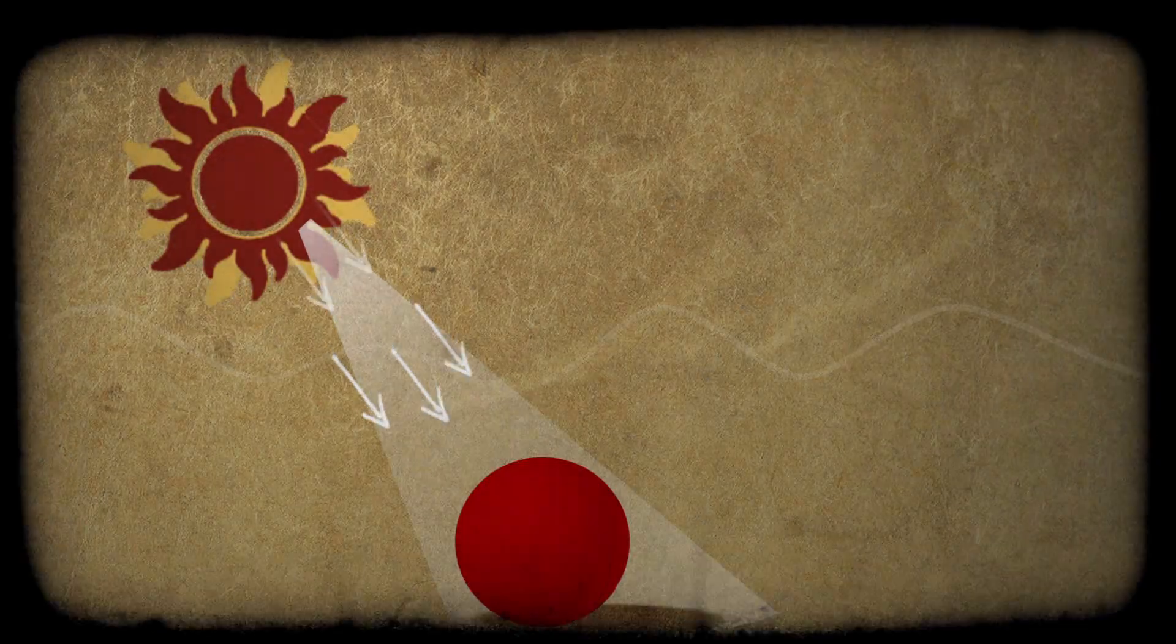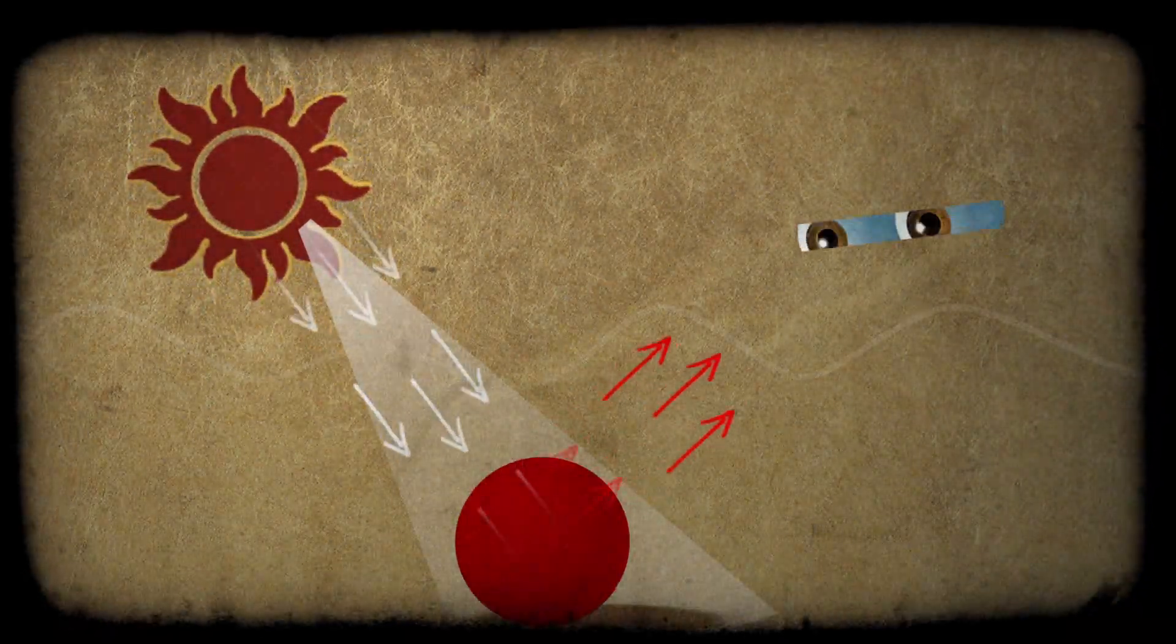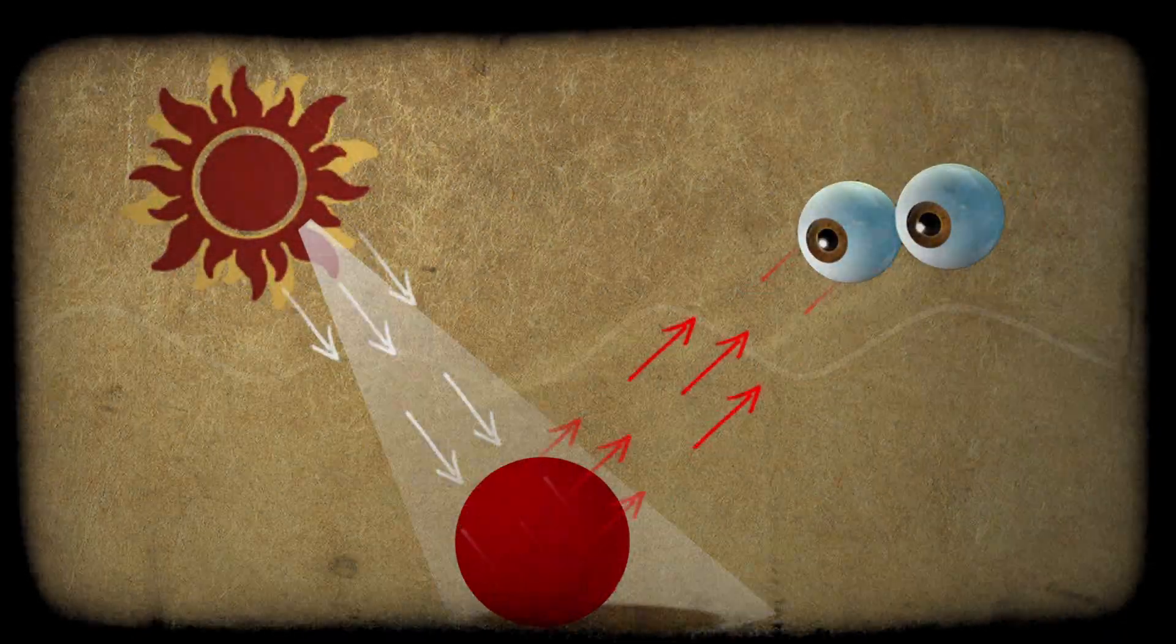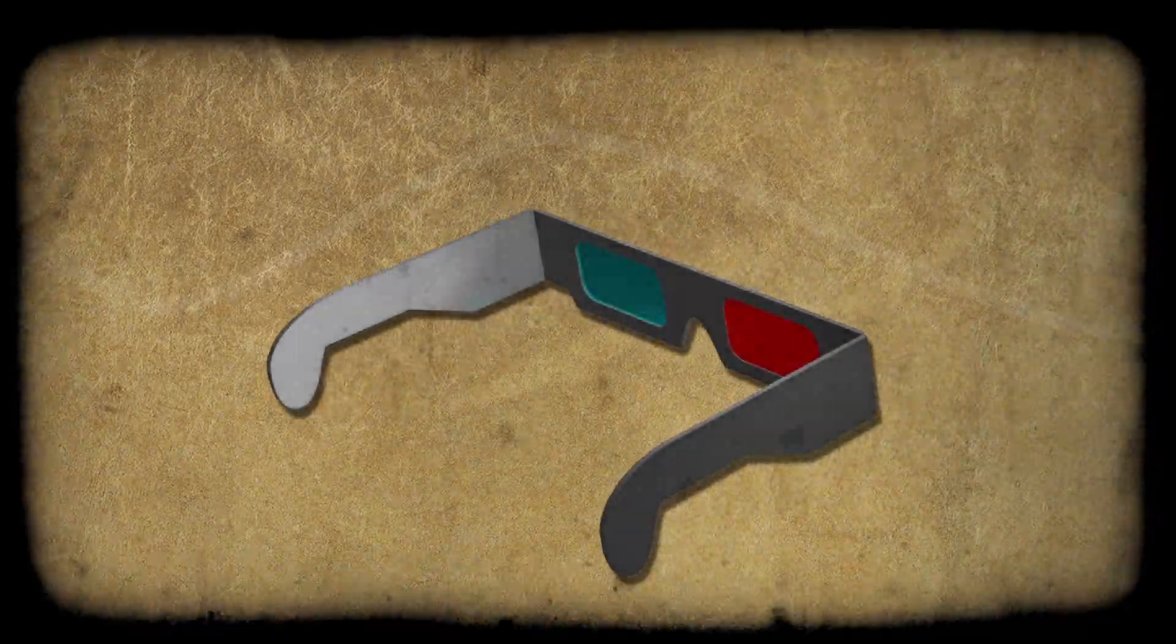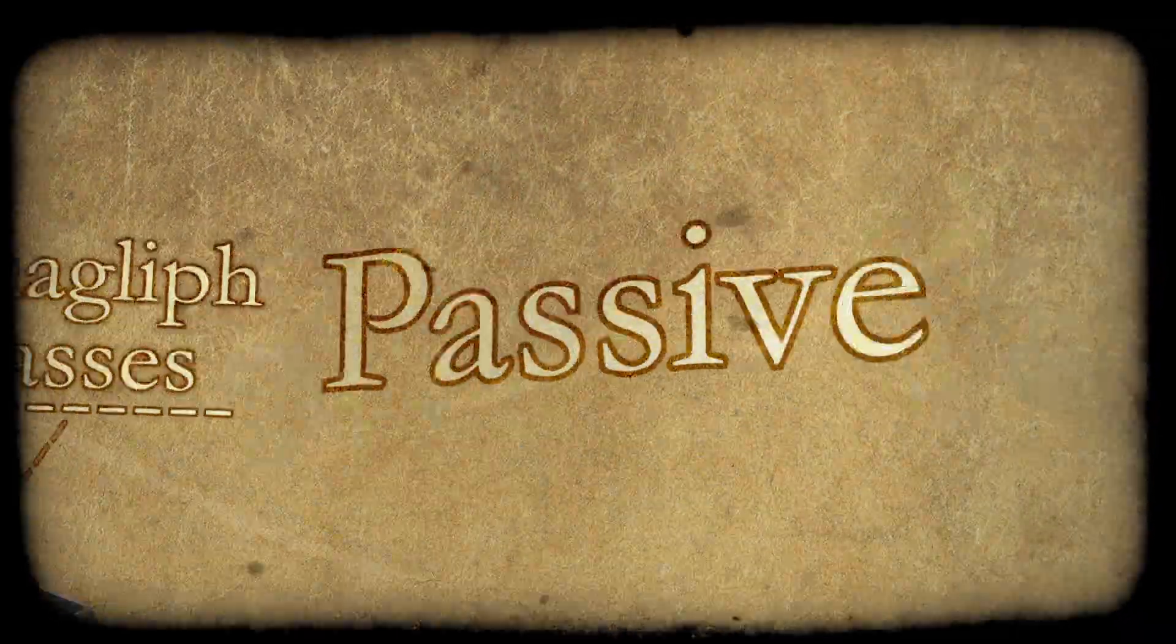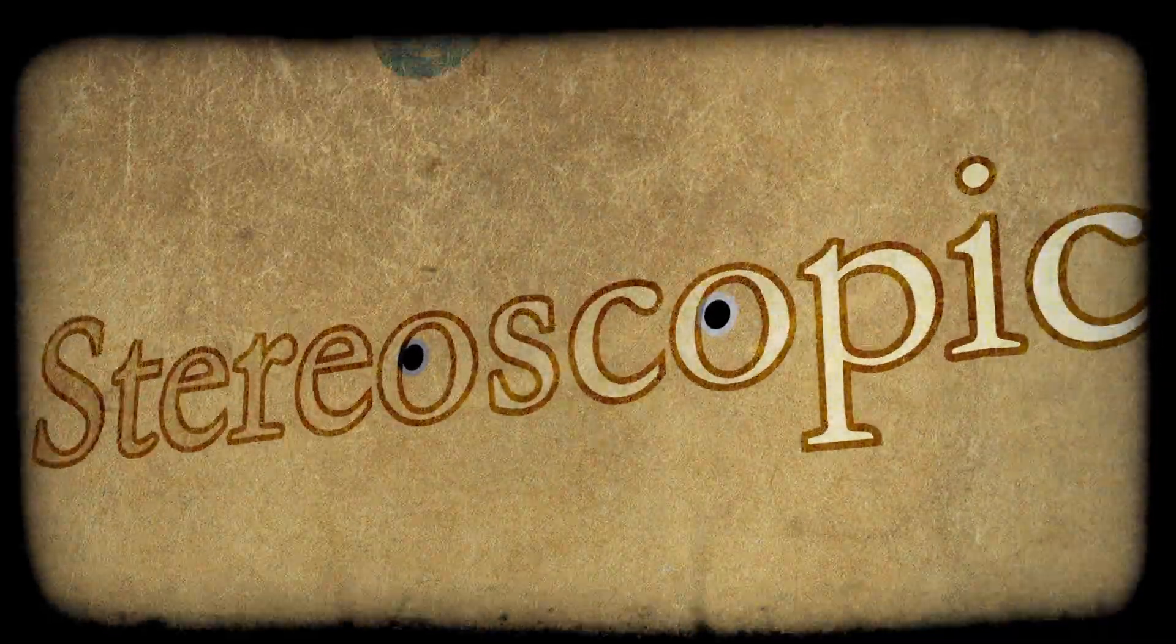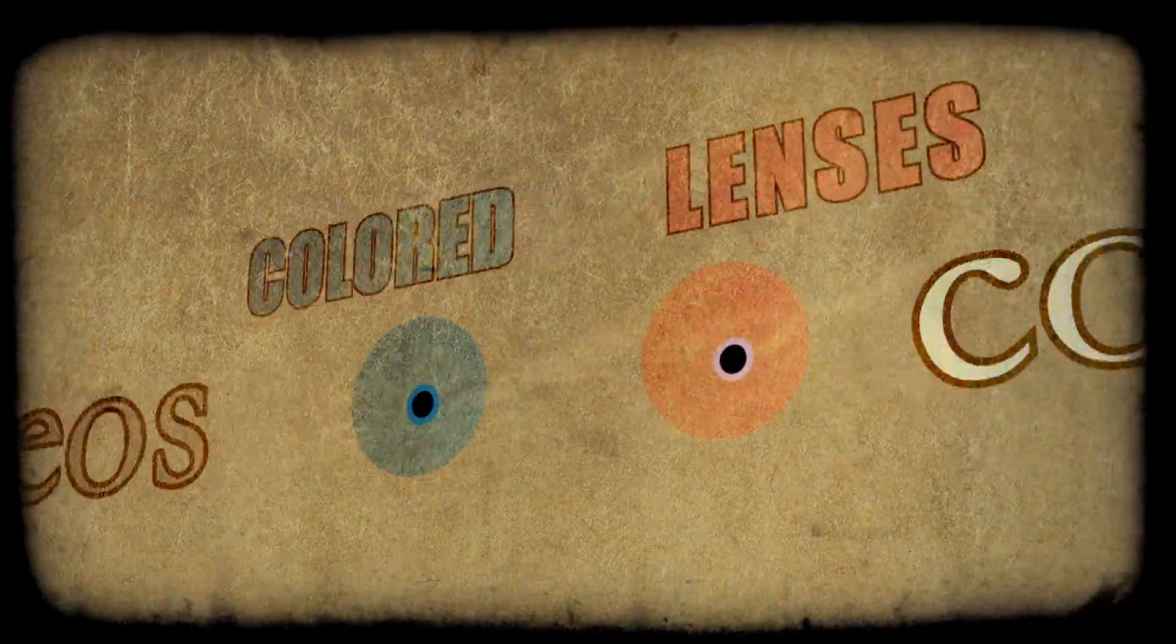When sunlight hits a red ball, some of the light is absorbed, and some of the light is reflected, reaching our eyes. In this case, the ball reflects red and absorbs all other colors. This is the principle of anaglyph glasses, a past stereoscopic technique that uses colored lenses to separate images, usually one blue and one red.